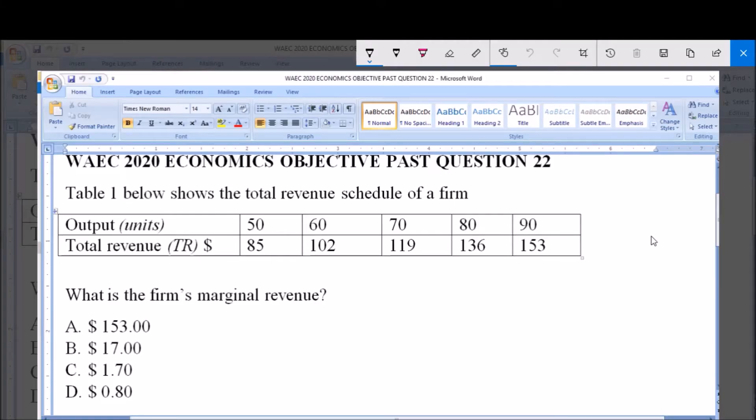Hello and welcome. I will be answering WJEC 2020 Economics subjective part question 22. You have this table, table one, which shows the total revenue schedule of a firm with two parts: output and total revenue.